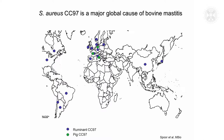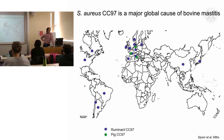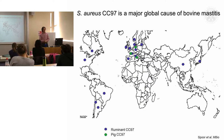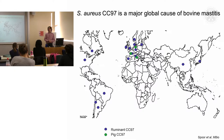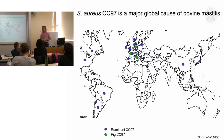I wanted to talk about one particular clone, CC97, which is probably the major clone of Staph aureus associated with causing bovine mastitis on a global scale. This map shows the various locations where CC97 has been reported to cause bovine mastitis, and pretty much everywhere you look, it's been found.